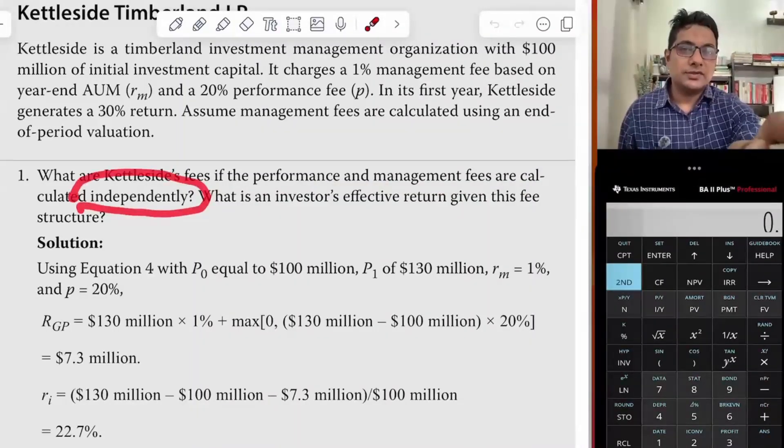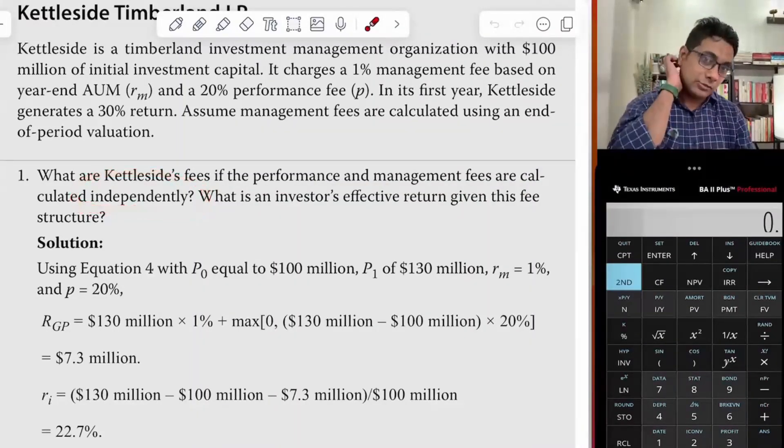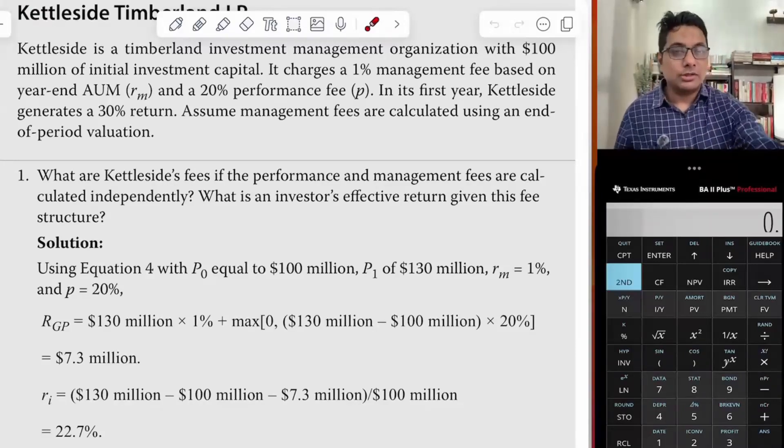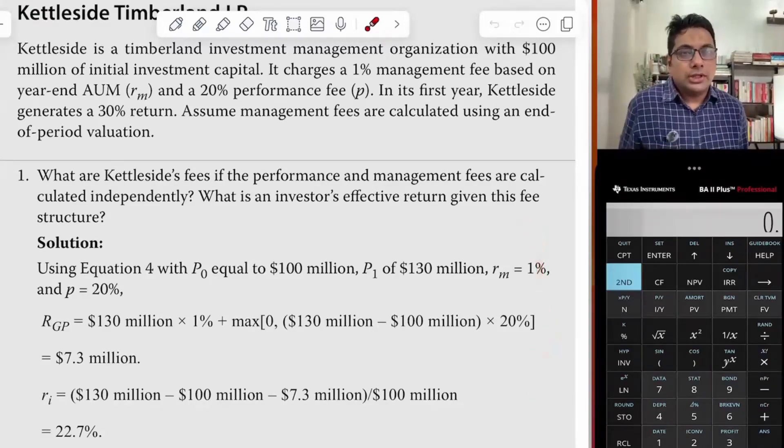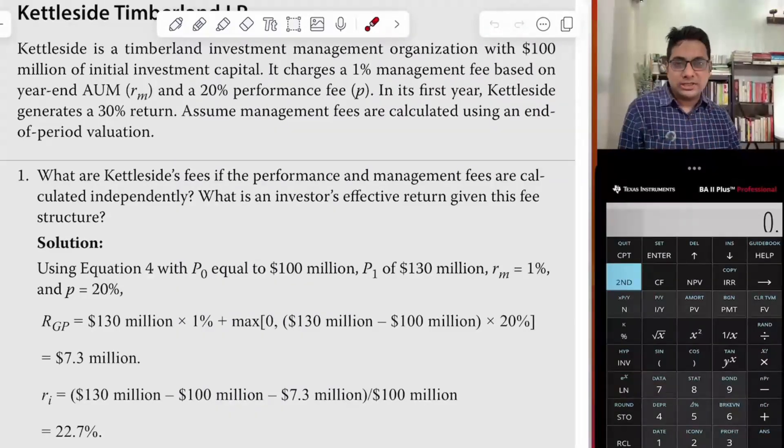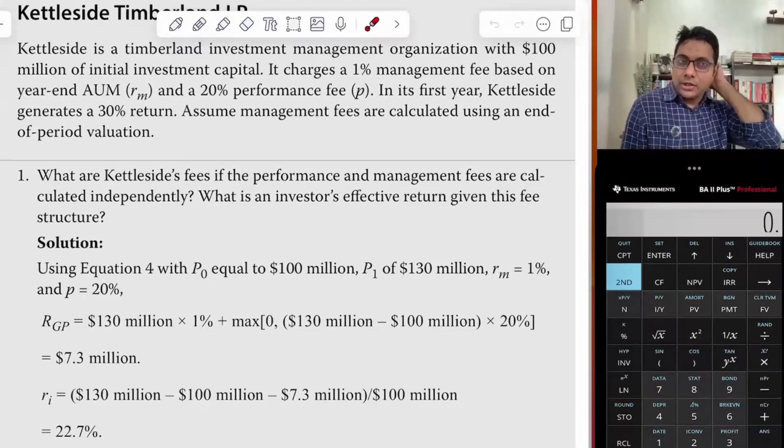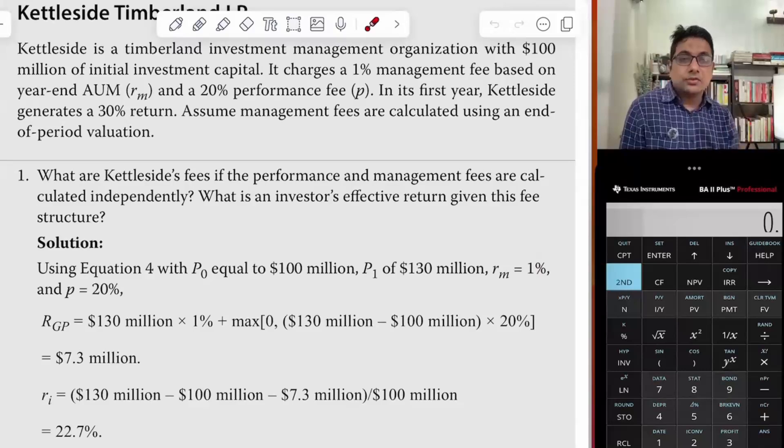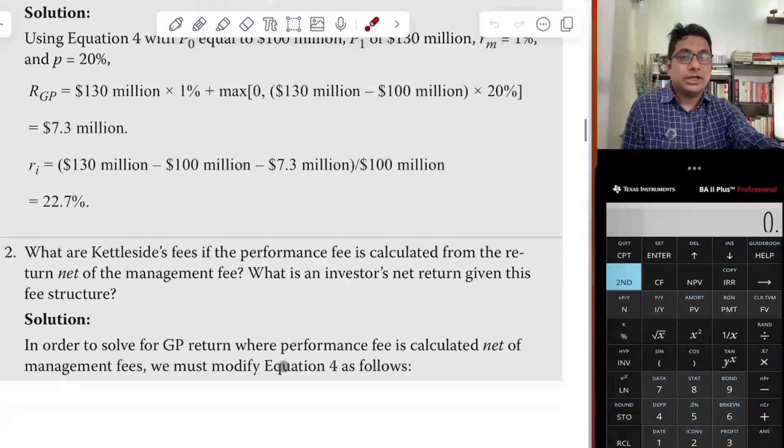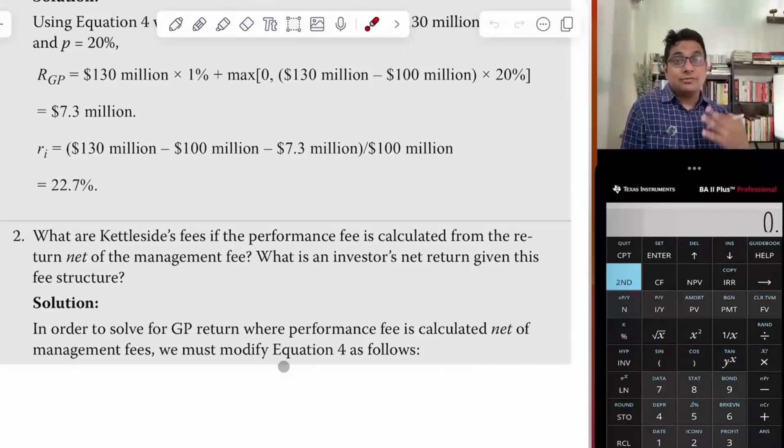He said that the performance fee is independently calculated. When we say independently calculated, we calculate it this way: we have a little bit of management fee and a little bit of the return. Now, in the next step, the clause says it must be independently calculated. Rather, it is calculated net of management fees.